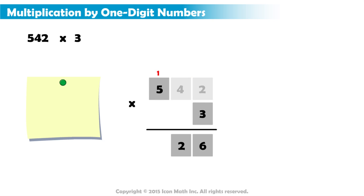Now, we multiply 3 by 5 to get 15. Then, we add the digit we placed above the 5, which is 1, to get 16. So, we write 6 in the hundreds column and 1 in the thousands column.